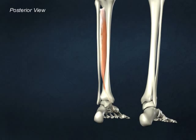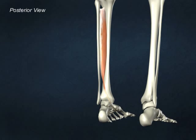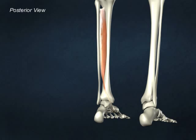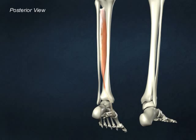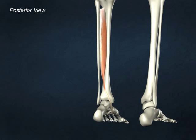Tibialis posterior inverts the foot and assists in plantar flexion of the foot at the ankle. It is innervated by the tibial nerve.